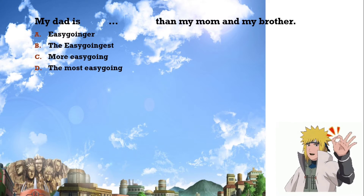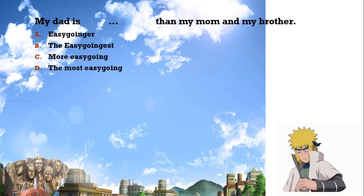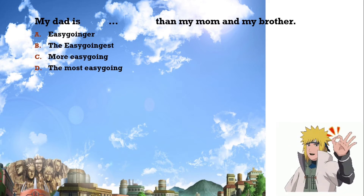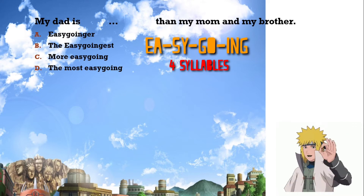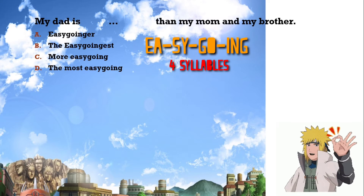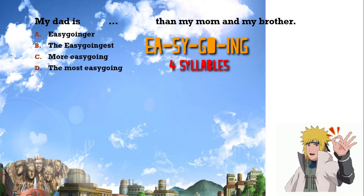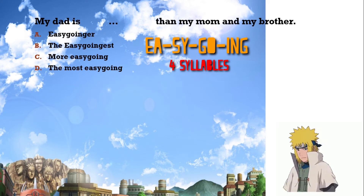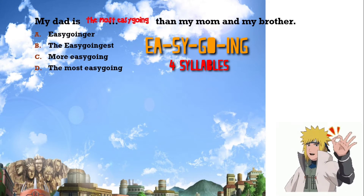Number three: 'My dad is ___ than my mom and my brother.' This sentence is comparing three people — my dad, my mom, and my brother — so it should be superlative. The basic adjective is 'easygoing,' meaning santai, tidak ribet. 'Easygoing' has four syllables, so we use 'most.' The answer is: 'My dad is the most easygoing than my mom and my brother.'